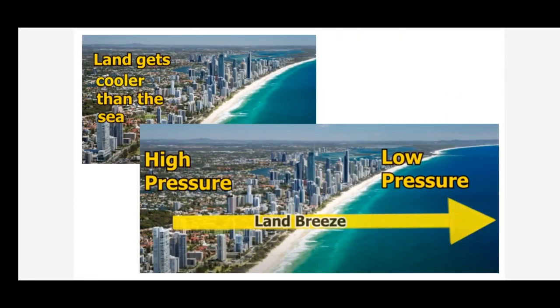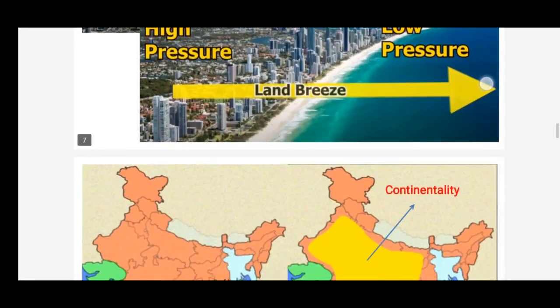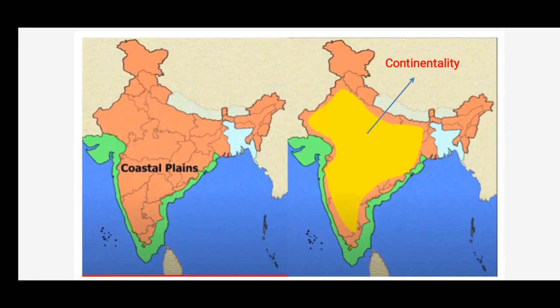At night time it becomes vice versa. The land gets cooler quickly than the sea, so on the land the temperature is low and the pressure is high. But on the sea, the temperature is comparatively high and pressure is low, so the wind starts blowing from land towards the sea. This is called land breeze. During the night time, what we have is land breeze. Due to this land and sea breeze, a moderating influence on climate is developed in coastal areas.